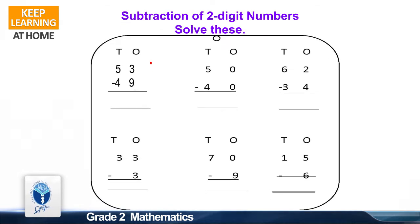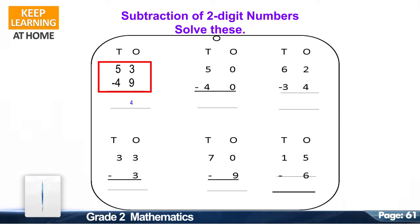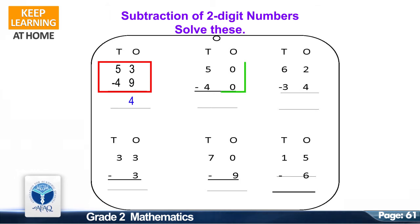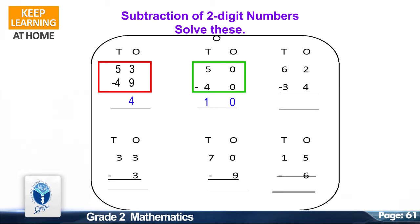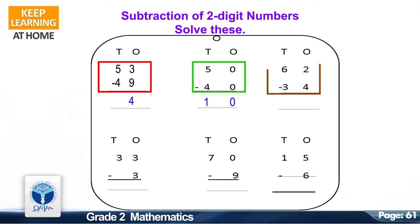Let's solve the first question. The question is 53 minus 49. The correct answer is 4. The next question: 50 minus 40. The correct answer is 10.